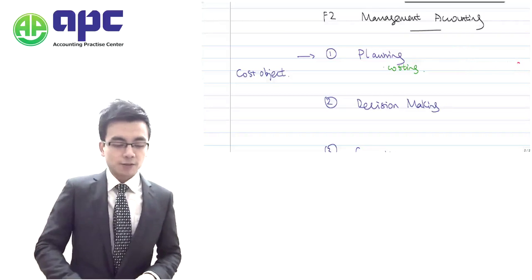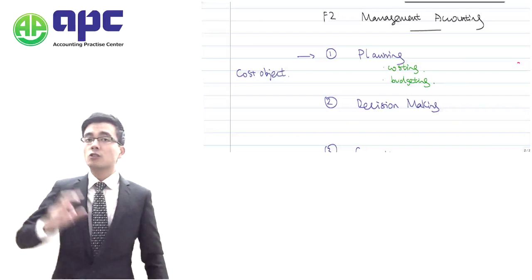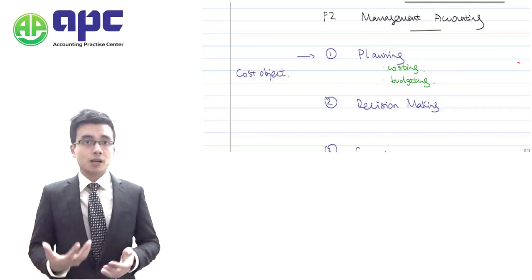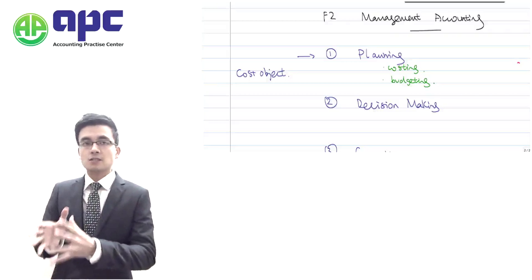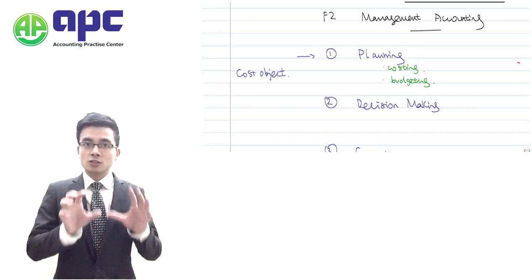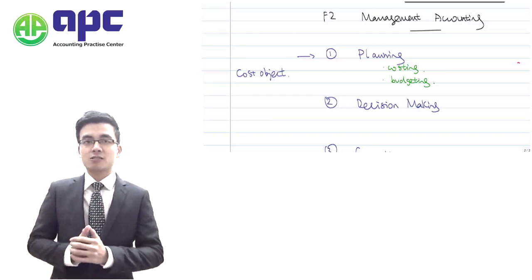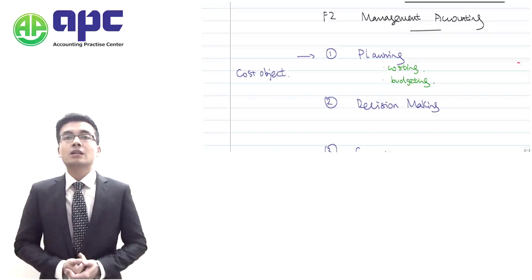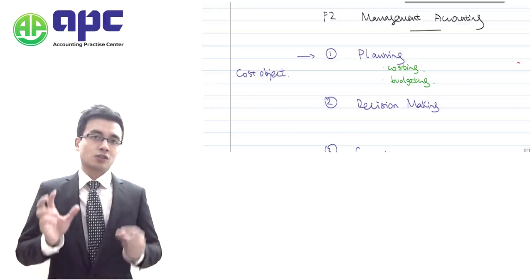Once we know our costing, the next thing within the planning stage is budgeting. Budgeting is where we forecast how many units we are going to produce and what the total costs the company has to incur are, as well as the estimated selling price. Using estimated sales revenue minus estimated costs gives us the estimated profit. We then plot this into the budgeted statement of financial position, budgeted statement of profit and loss, and the budgeted statement of cash flow, which we also use from an investment decisions point of view.